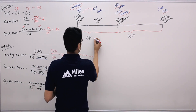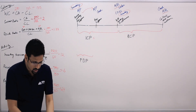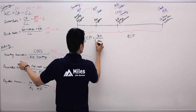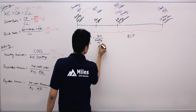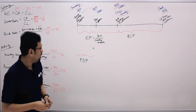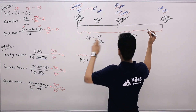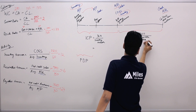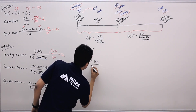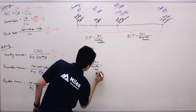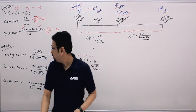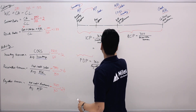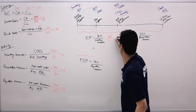The formula for the Inventory Conversion Period is 360 divided by inventory turnover. The Receivables Collection Period is 360 divided by receivables turnover. The Payables Deferral Period is 360 divided by payables turnover. Using our numbers: inventory turnover was 12, so ICP equals 360 divided by 12, which is 30 days.